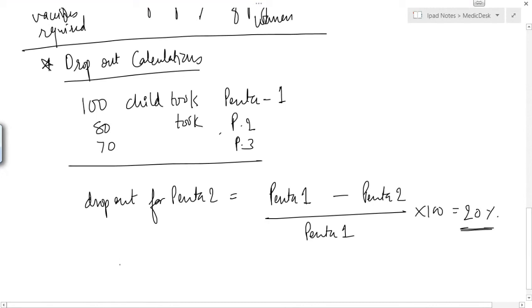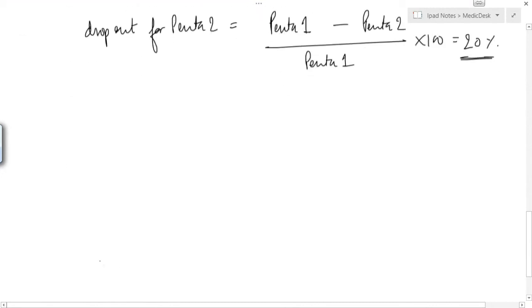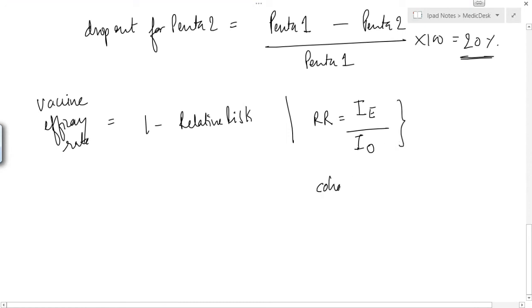Now if we are asked to calculate vaccine efficacy rate, it will be calculated as 1 minus relative risk, and relative risk equals incidence in exposed upon incidence in unexposed. And these both indices would be in cohort. So from cohort we will find out vaccine efficacy rate.